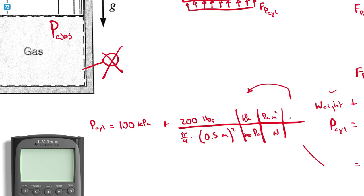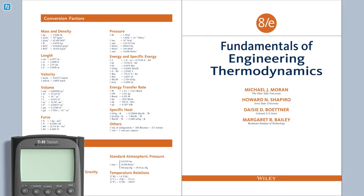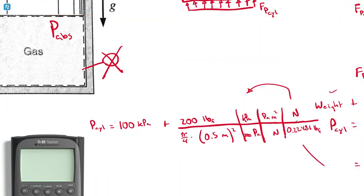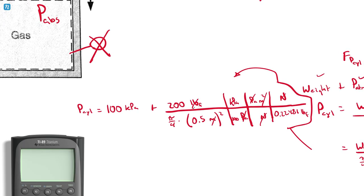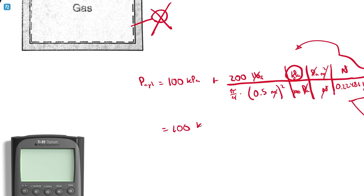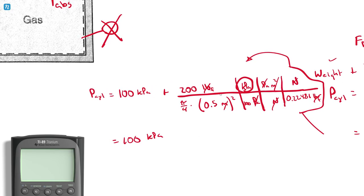From the unit conversions in the textbook: one newton equals 0.22481 pound-force. So my conversion factor is 0.22481 pound-force per newton. Applying this, the pascals cancel with newton per square meter, and the square meters cancel, leaving an answer in kilopascals.